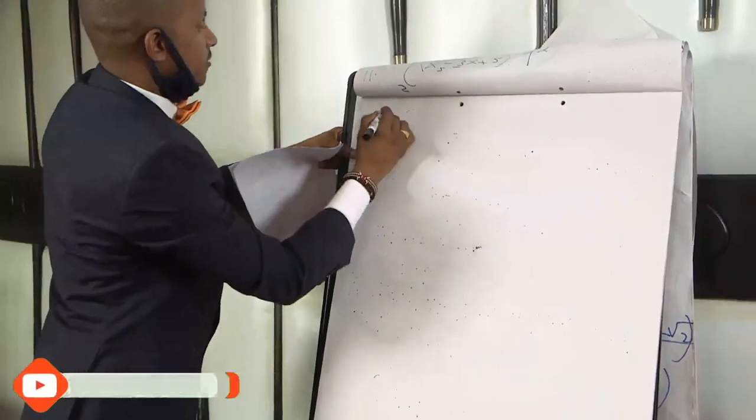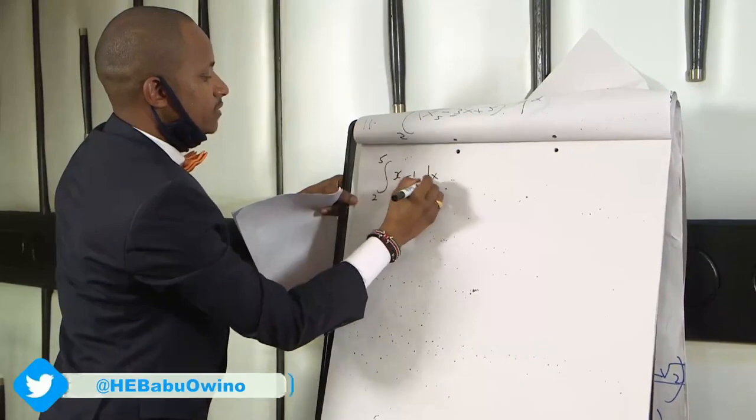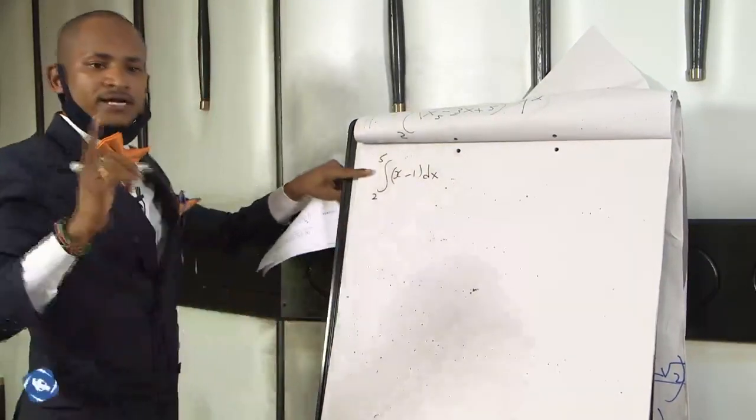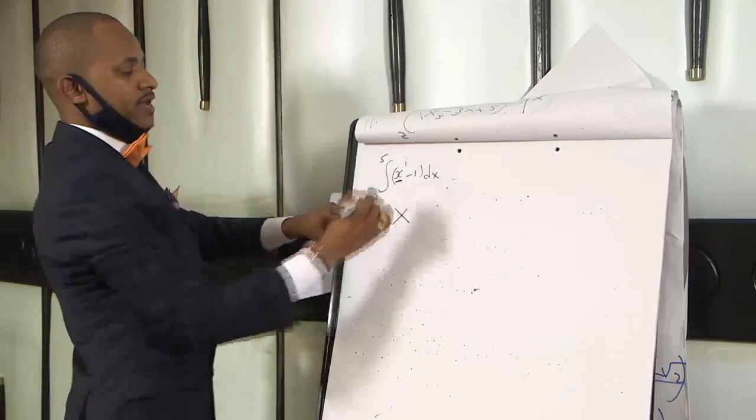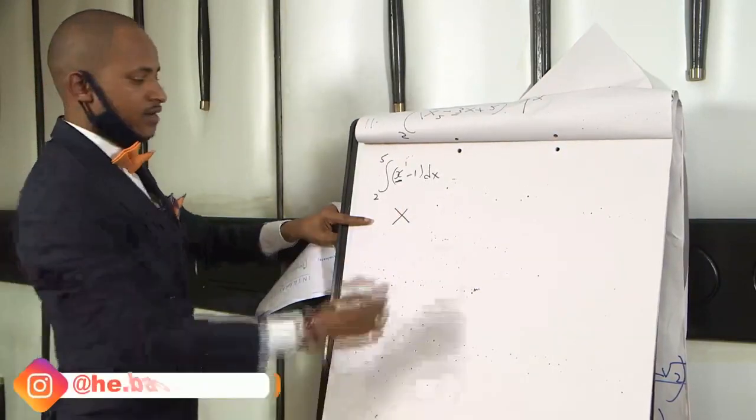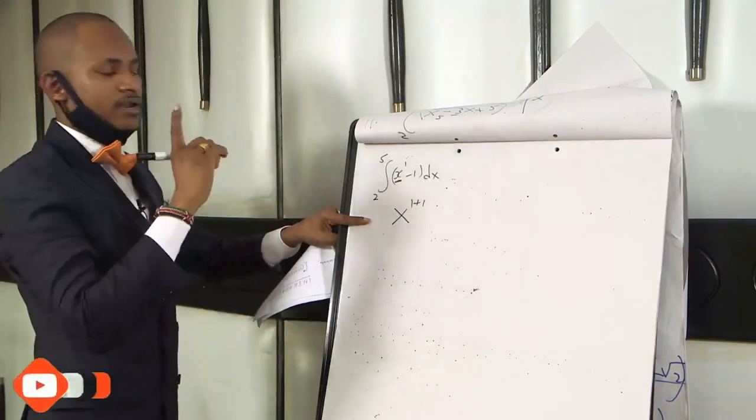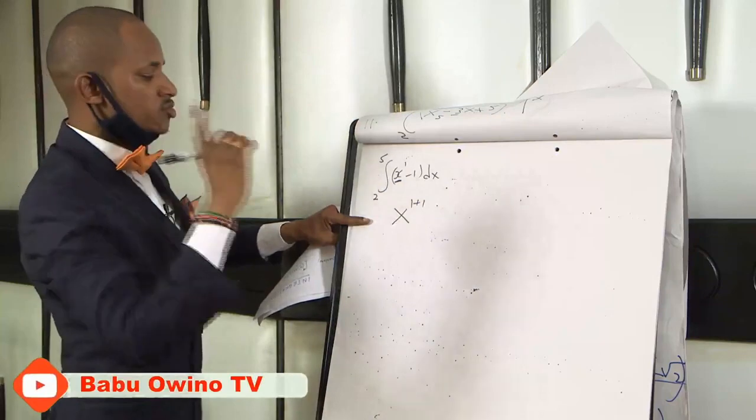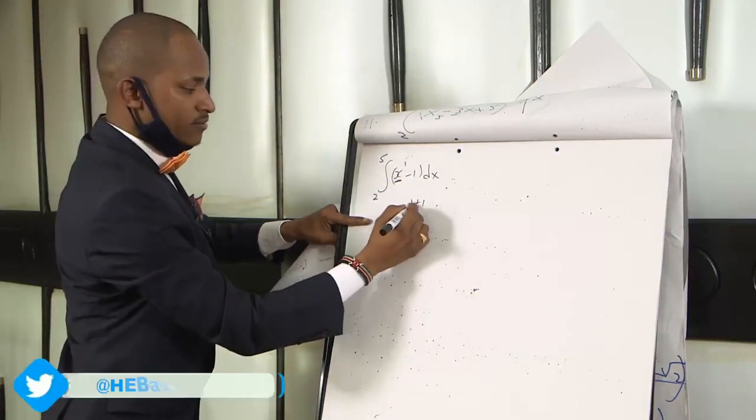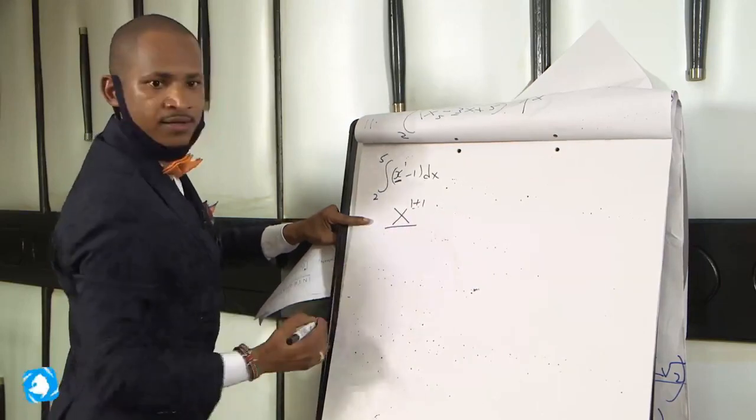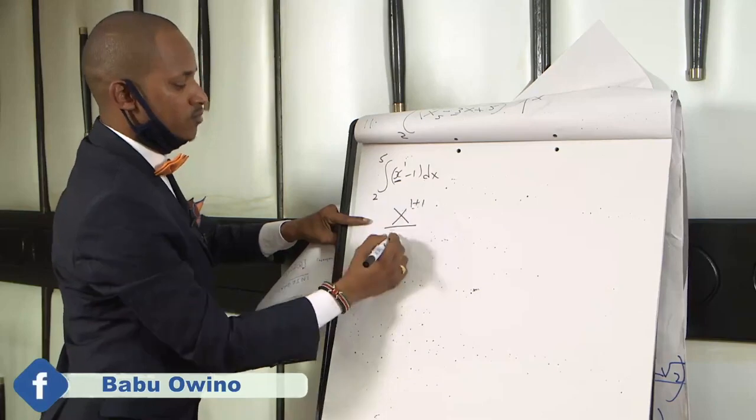So we are integrating with the limits, upper limit is 5, lower limit is 2 of x minus 1 dx. When you are integrating x, just write x. Then x has a silent power of 1. Add 1 to it. Remember differentiation we were subtracting 1, but integration you add 1. Then divide with what you add. What you get from the power, you divide with that answer. With the summation of 1 plus 1, that is 2.